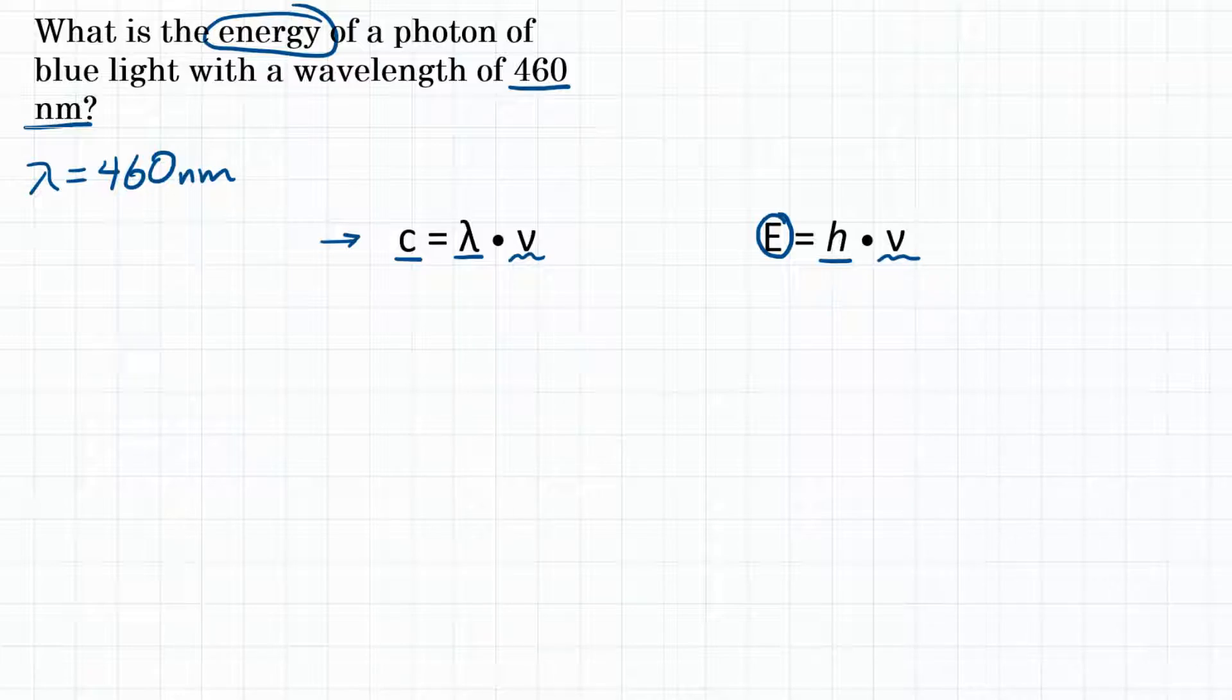Okay, so for the first problem, we need C, the speed of light. That is a constant, it is 3.00 times 10 to the 8th meters per second. So we have everything to solve for frequency. Let's manipulate our equation to isolate for V, the variable for frequency. To do that, we're going to divide both sides by wavelength, so that on the right side, wavelength cancels out, and we're just left with frequency. Let's rewrite this equation, where V frequency is equal to the speed of light over wavelength. Now we can plug in our values.